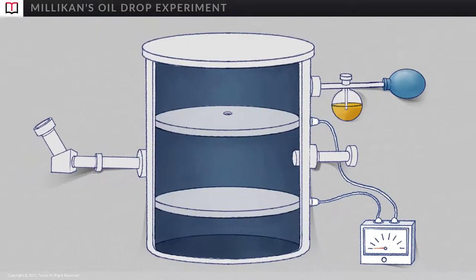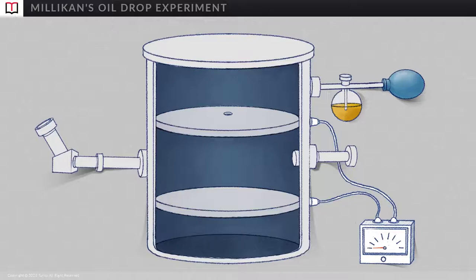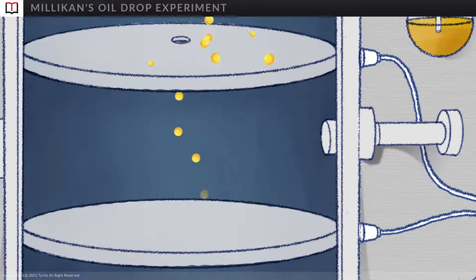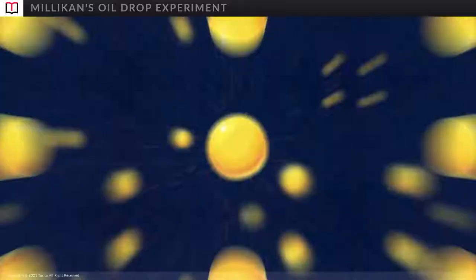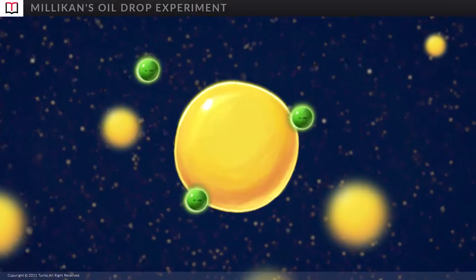Now, let us see the actual experiment stepwise. As you can see here, a mist of oil is collected in the chamber placed above the metallic plates. And through the small hole, it entered the space between the electrodes. The x-ray in this space is used to ionize the gas and ejected electrons are adsorbed onto the surface of oil droplet.